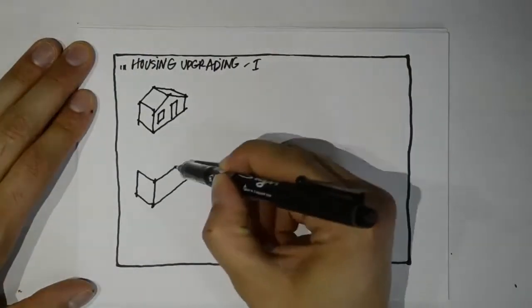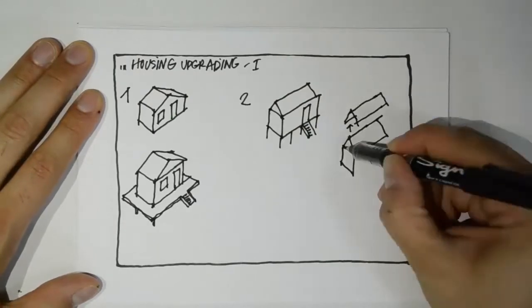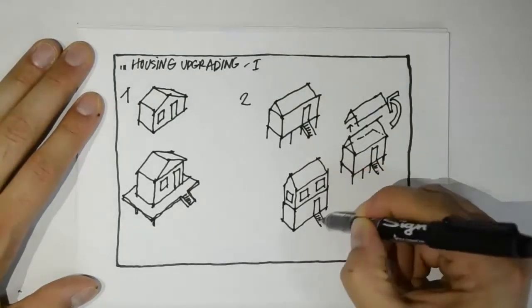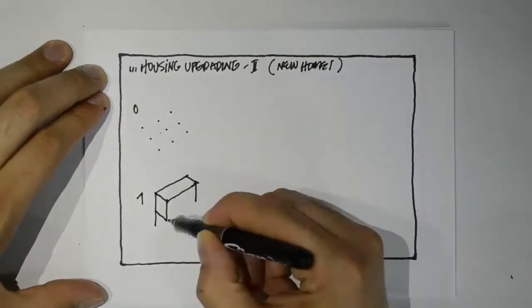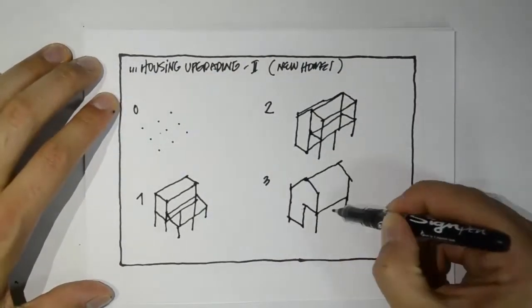They considered using their savings slowly to make small changes over time, such as constructing ramps and walkways or building up to a second level. They also talked about different typologies and potential ways of improving some of the most poorly constructed houses.